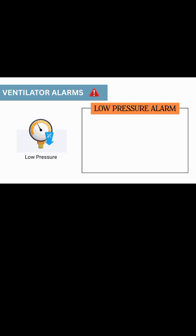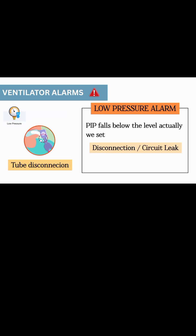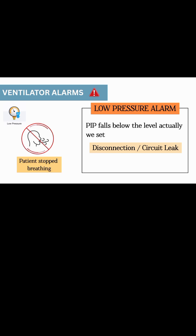Then low pressure alarm. This alarm will go off when passive inspiratory pressure falls below the level we have already set. This indicates any disconnection or leak from the circuit. The reason may be tube disconnection or patient stopped breathing — it can be a deadliest reason.